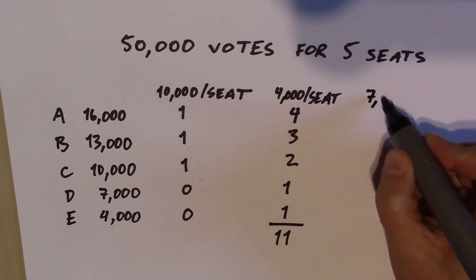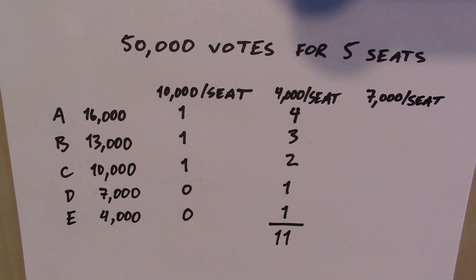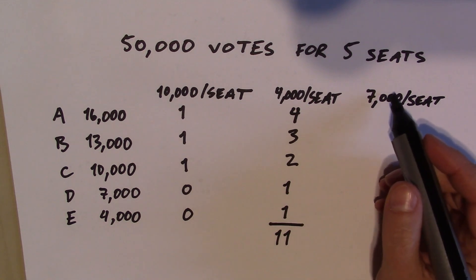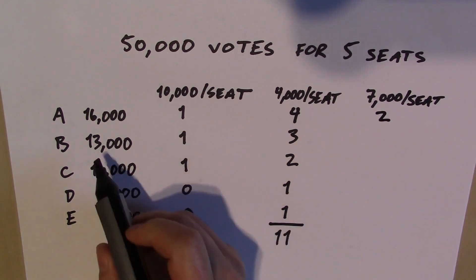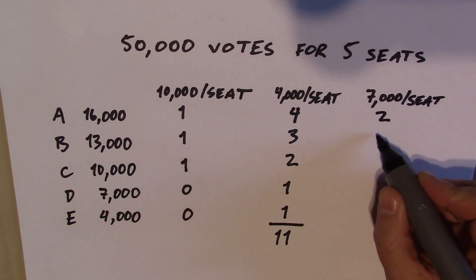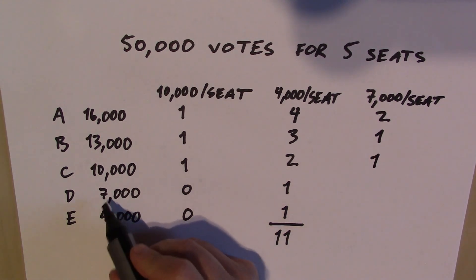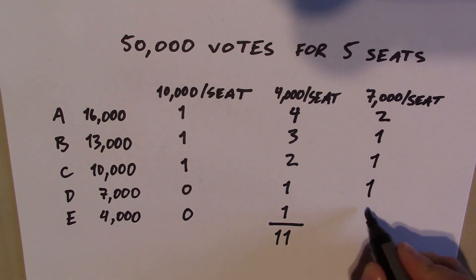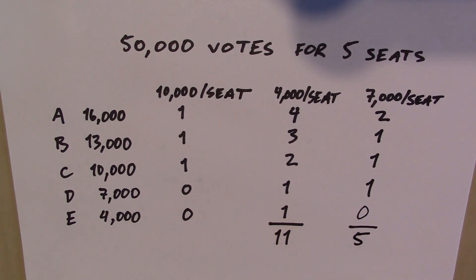Let's go in the middle. What happens if we set the price at 7,000 per seat? This turns out to be a lucky guess because it's the right answer — but if it didn't work out we could keep narrowing down. Party A with 16,000 votes can buy 2 seats. Party B can buy 1 seat with 6,000 left over. Party C can buy 1 seat with 3,000 left over. Party D has exactly enough for 1 seat. Party E with only 4,000 votes does not get a seat. So we've awarded exactly 5 seats — that's exactly what we wanted.